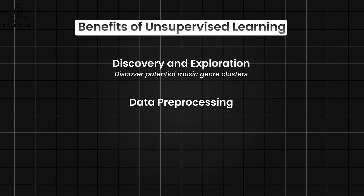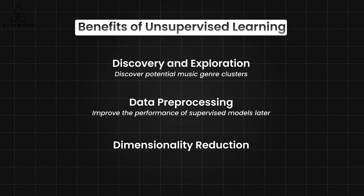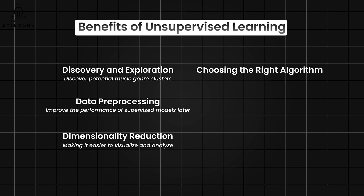Unsupervised learning can be a valuable first step for supervised learning tasks. You can use clustering to identify groups within your data and potentially improve the performance of supervised models later. Techniques like principal component analysis, or PCA, can reduce the complexity of high-dimensional data, making it easier to visualize and analyze. There are various unsupervised learning algorithms, each suited for different tasks — choosing the right one depends on your data and goals. Unsupervised learning won't give you definitive labels like 'rock' or 'pop,' so you'll need to analyze the clusters and potentially use your domain knowledge to interpret their meaning.